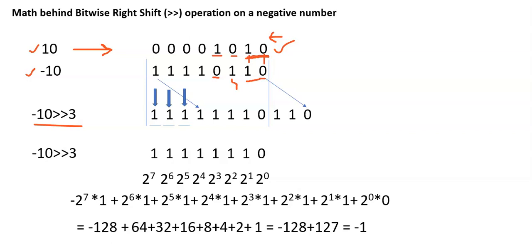To summarize: we start from the right hand side of a positive number, copy all those bits until we get the first one, copy that first one as well, and later complement all those remaining bits. This is the way of finding the 2's complement value. After finding the 2's complement value, the minus 10 value is 11110110.